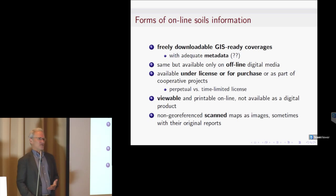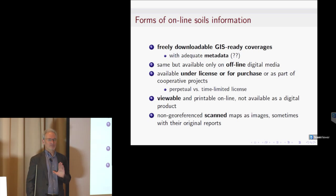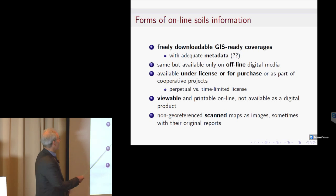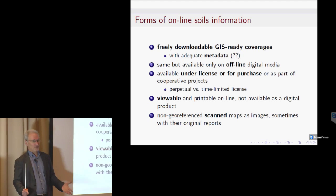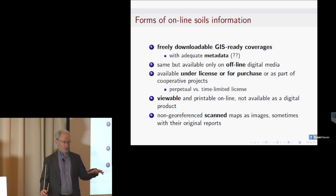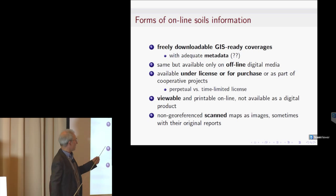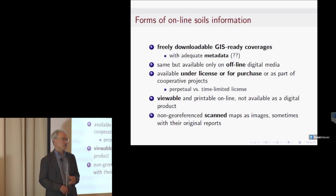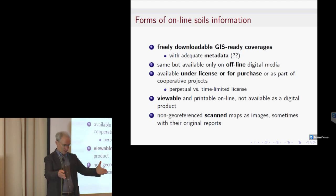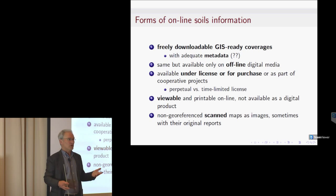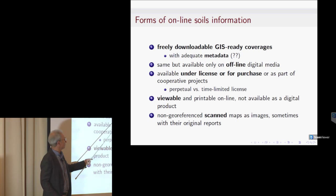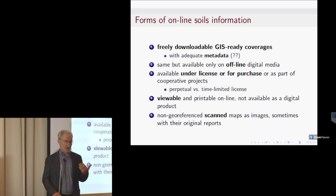I want to talk about the different forms in which soil metadata might come. The ideal is a freely downloadable GIS coverage that you can get, put into your own project, and work with. However, it's not useful at all if you don't have proper metadata. You can have the coverage sitting there but not know what coordinate reference system it's in, what the attributes mean, what lab analyses were done, or who collected the data. Proper metadata is essential.